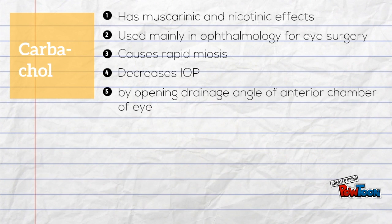For carbachol, it has both muscarinic and nicotinic effects. It is used mainly in ophthalmology for eye surgery because it causes rapid miosis. It decreases intraocular pressure (IOP) by opening the drainage angle of the anterior chamber of the eye.